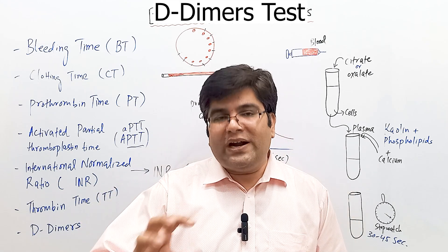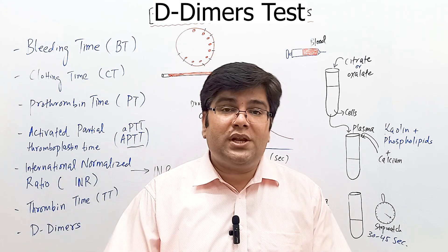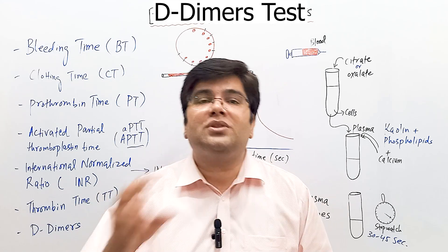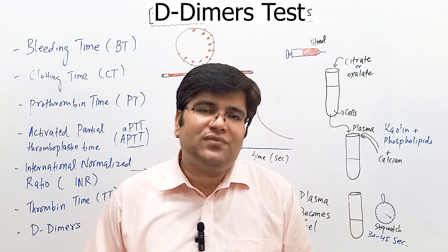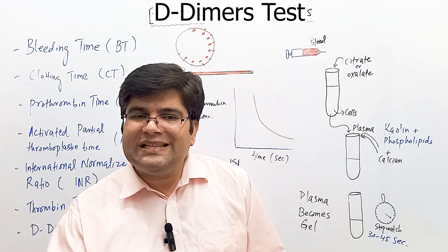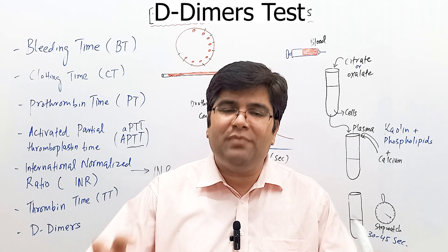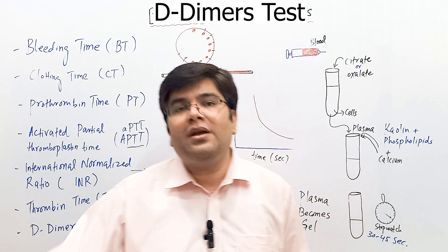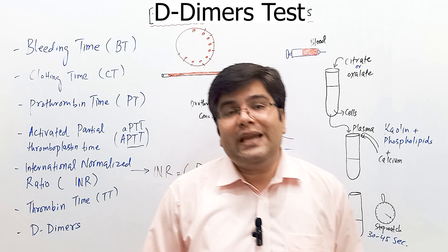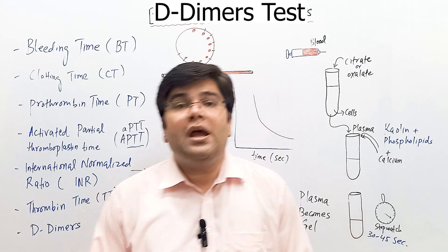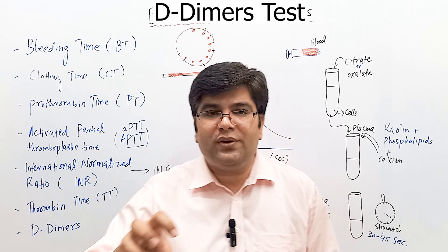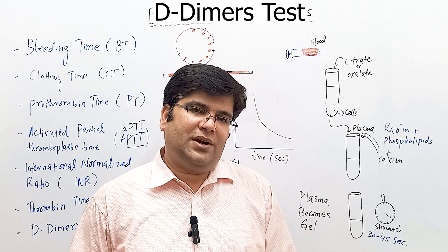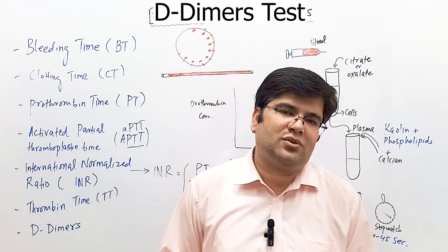In DIC, widespread small clots form throughout the body and there is consumption coagulopathy — platelets and clotting factors are consumed, so platelet levels fall. All clotting factors, whether in the intrinsic or extrinsic pathway, are used up. This increases prothrombin time (extrinsic pathway affected) and increases APTT (intrinsic pathway affected). Breakdown of cross-linked fibrin fibers also raises D-dimer levels. This is the typical picture of DIC.